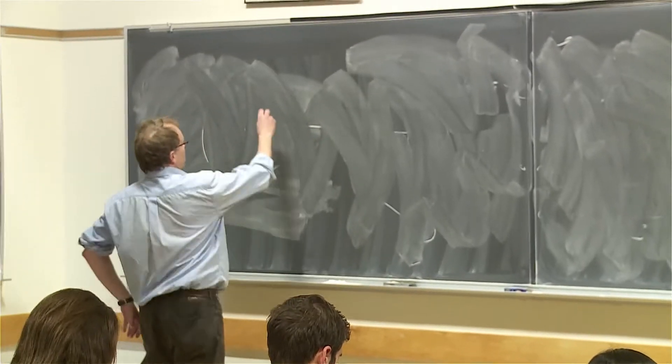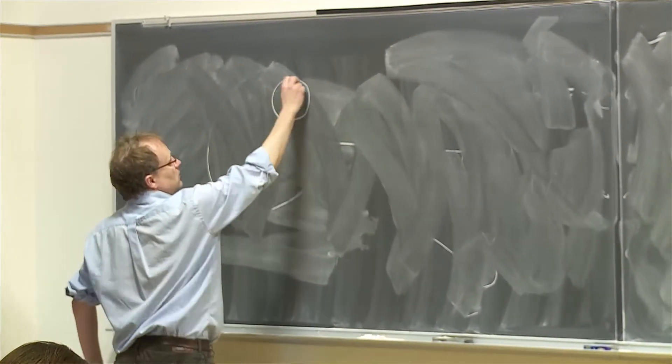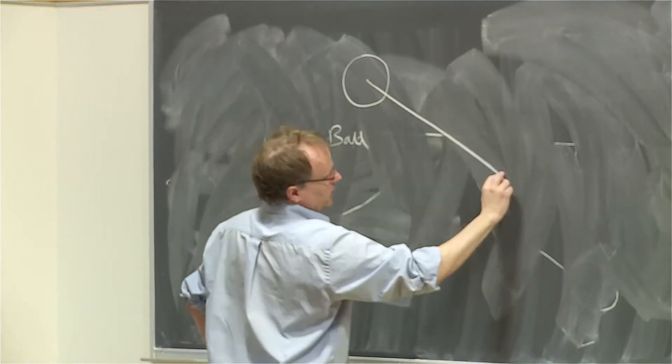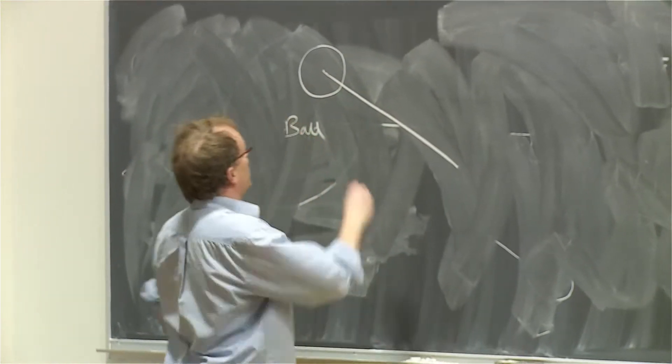Here's another example. Let's say you have a ball and you're spinning it in a circle. Let's make a horizontal circle.